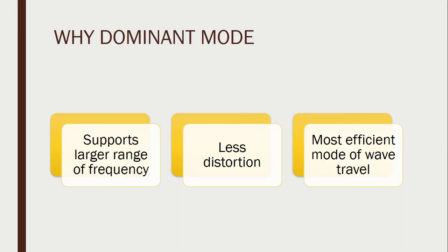Why study dominant modes? When a waveguide propagates waves in the dominant mode, three main advantages are observed. First, it is capable of transmitting very large frequencies in the same mode. Second, there is less distortion. Third, it is most efficient. The main goal of designing any device is for total energy from the source to reach the destination. By designing a waveguide to operate in the dominant mode, if 100% energy is supplied at the source, at least 99% of that energy is achieved at the receiver side. That is why we study dominant mode.